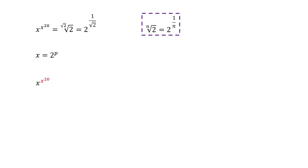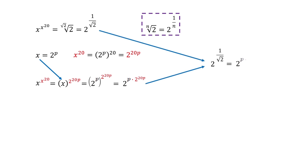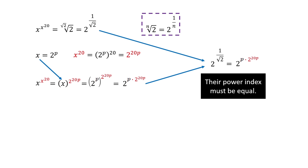Because the left hand side is a power tower, we need to be careful to deal with it. Let's look at this right term first. By plugging x equal to 2 to the power p, we got this, and then simplified to get 2 to the power 20 times p. Then we plug that in to replace this right term. Next, we plug in the substitution to replace x in the base and simplify. From these two parts, we got this equation. Because they have the same base, their power index must be equal, and we got this equation.